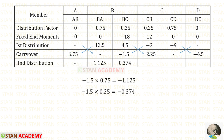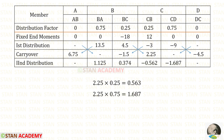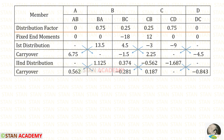Now let us do the second distribution in joint B by multiplying the carryover value with the distribution factors. We are getting negative values, so we enter them as positive. Then the second distribution in joint C: multiplying with the distribution factors gives positive values, so we enter them as negative. We then do the carryover by dividing by 2 and entering the answers.